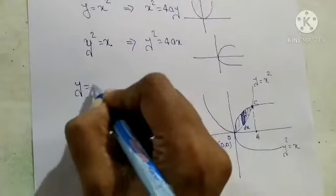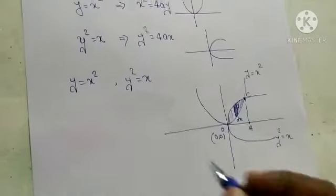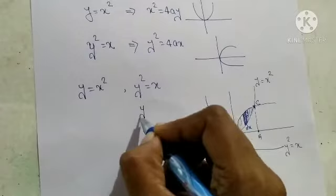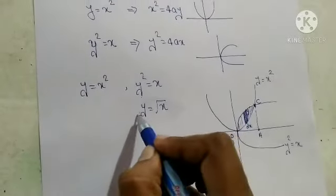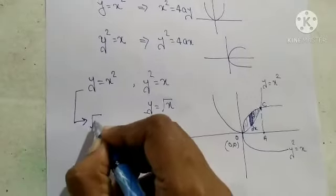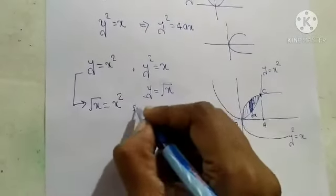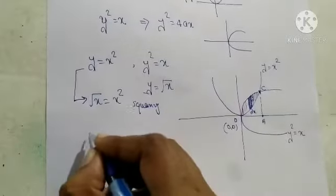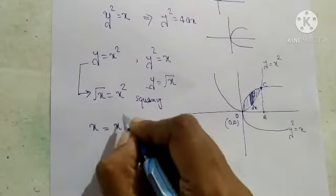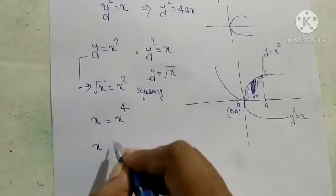y equal to x square is our first curve and y square equal to x is our second curve. From y square equal to x, we get y equal to root x. I am going to substitute y equal to root x into the first equation. So this equation becomes root x equal to x square. Squaring on both sides, we get x equal to x raised to 4.